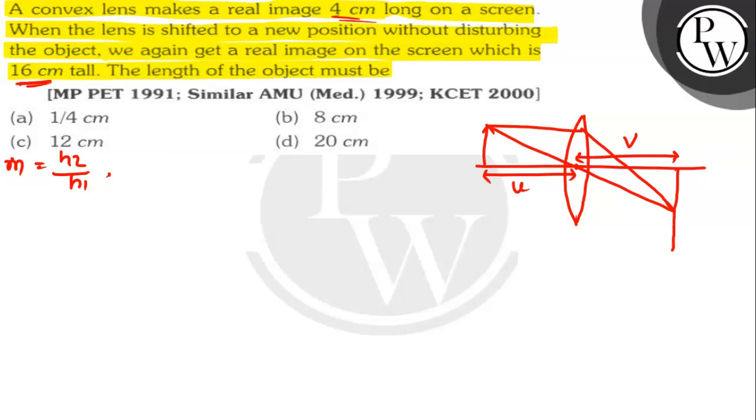Also, the formula of the magnification in terms of the object and the image distance is given by m equals minus v by u, where m is the magnification, v is the image distance, and u is the object distance. At initial position, the magnification is given by m1 equals h2 by h1, which is minus v by u.